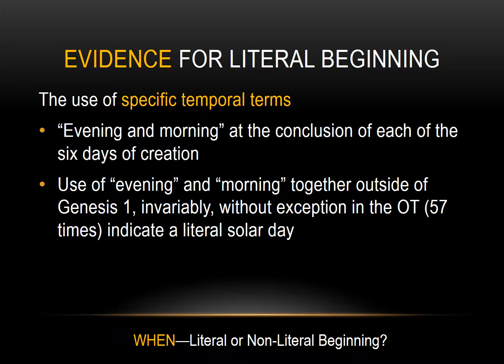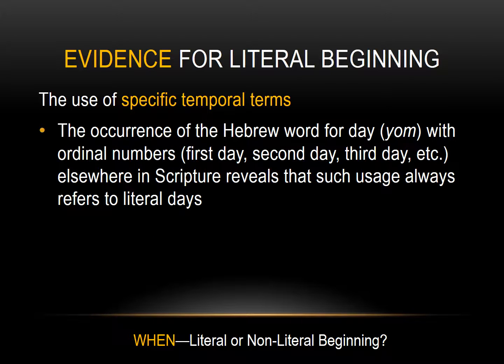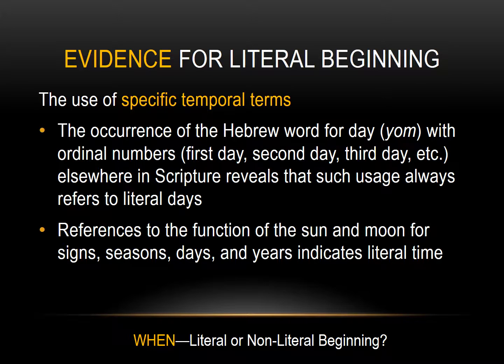The use of specific temporal terms in the creation account is evidence that it is to be taken literally. 'Evening and morning' at the conclusion of each of the six days clearly defines the days as literal 24-hour days. The use of these words together outside of Genesis 1, invariably and without exception in the Old Testament, indicates a literal solar day. The occurrence of the Hebrew word for day with ordinal numbers — the first day, second day, third day — elsewhere in Scripture always refers to literal days. References to the function of the sun and moon for signs, seasons, days, and years also indicates literal time.